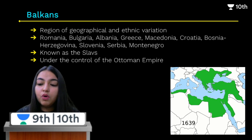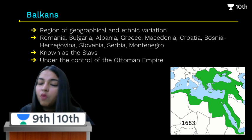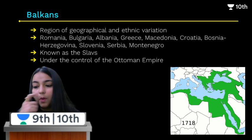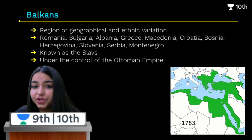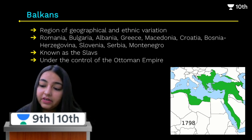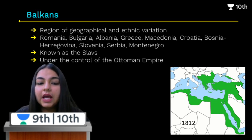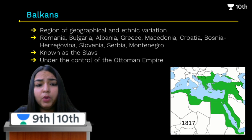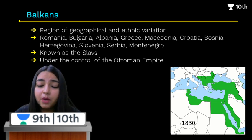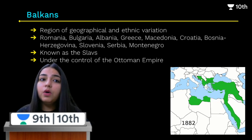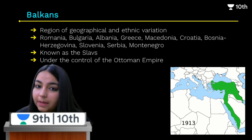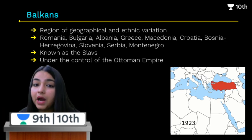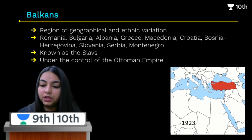One very important area in this context was the Balkans. After 1871, there was a lot of nationalist tension in Europe within the Balkans. This region comprised countries like Romania, Bulgaria, Albania, Greece, Macedonia, Croatia, and Serbia. The people living in these regions were called Slavs, and the entire Balkan area was initially under the Ottoman Empire — which was a Muslim empire.